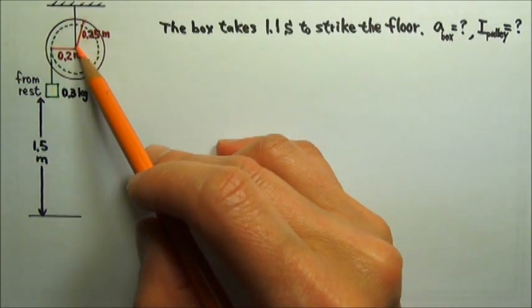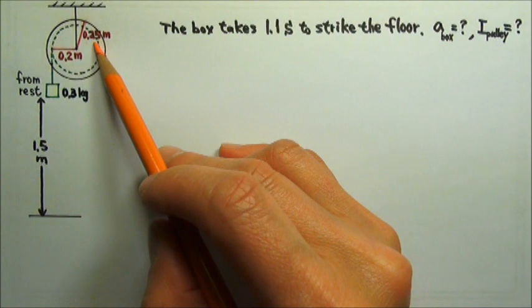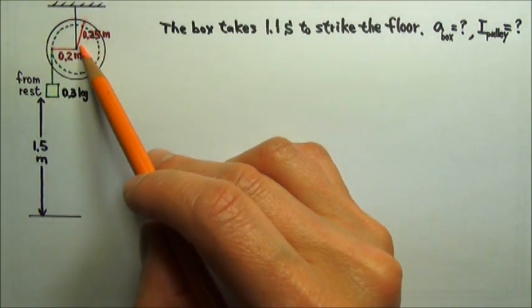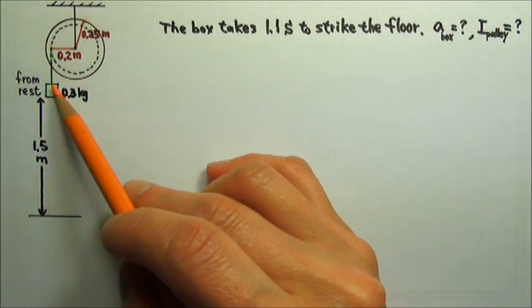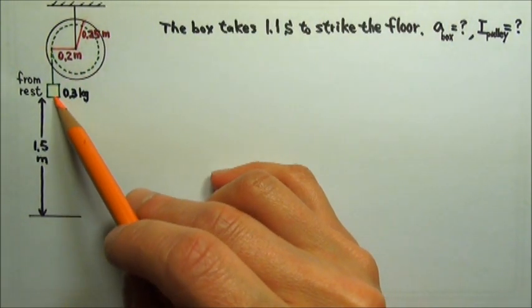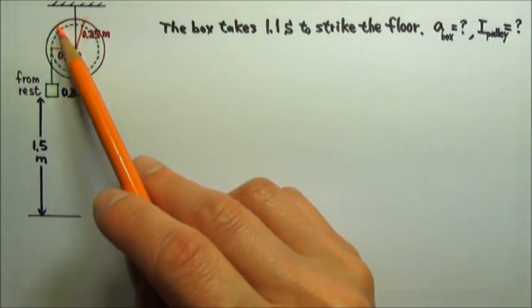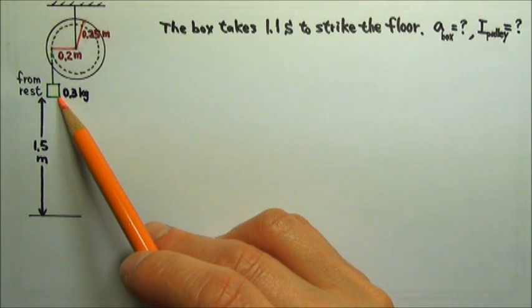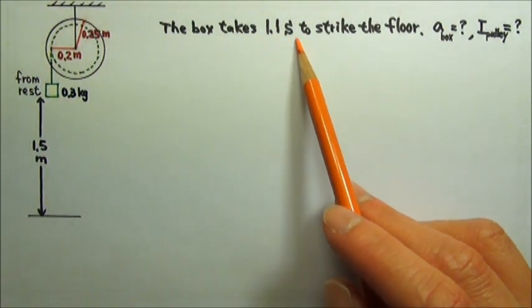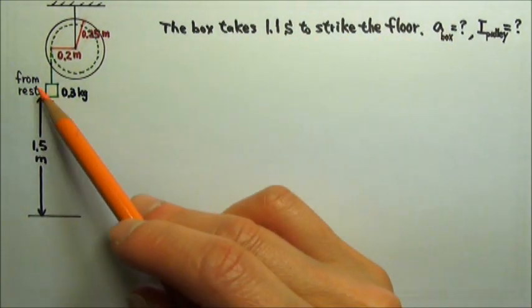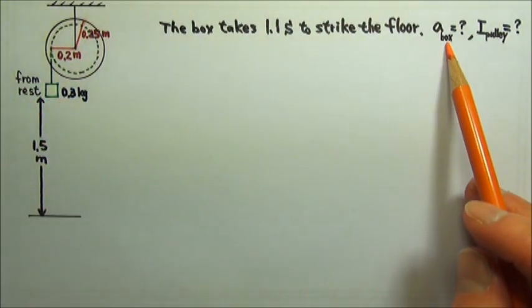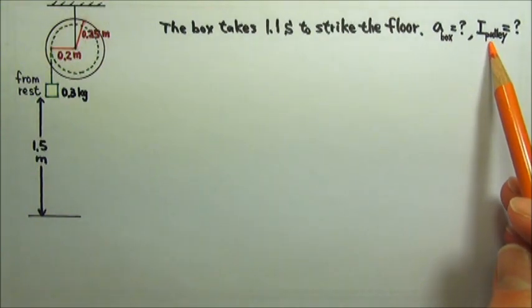This large pulley has an outer radius of 0.25 meters. A string wrapping around the part with 0.2 meter radius is attached to a 0.3 kg hanging box. The string does not slip on the pulley, and the friction at the pulley's axle is negligible. After released from rest, the box takes 1.1 seconds to strike the floor 1.5 meters below. Find the acceleration of the box during this time and the rotational inertia of the pulley.